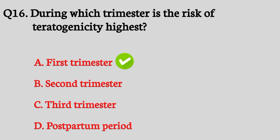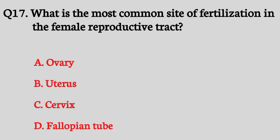Question number seventeen. What is the most common site of fertilization in the female reproductive tract? The right answer is option D: Fallopian tube.